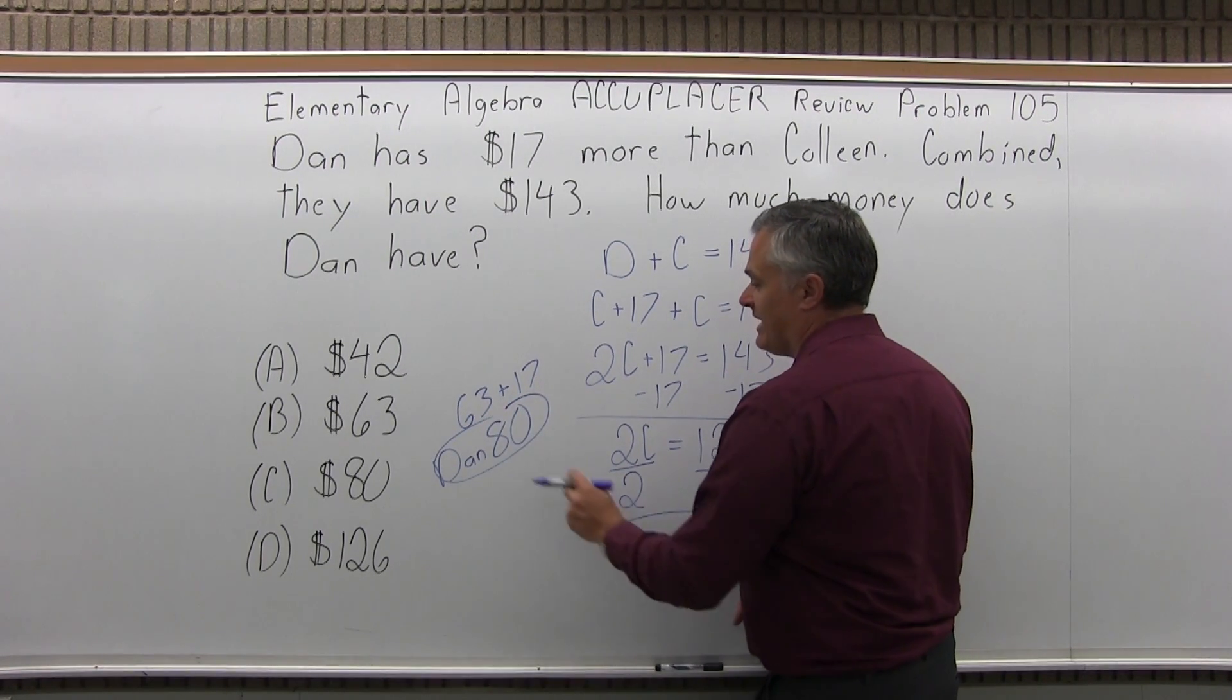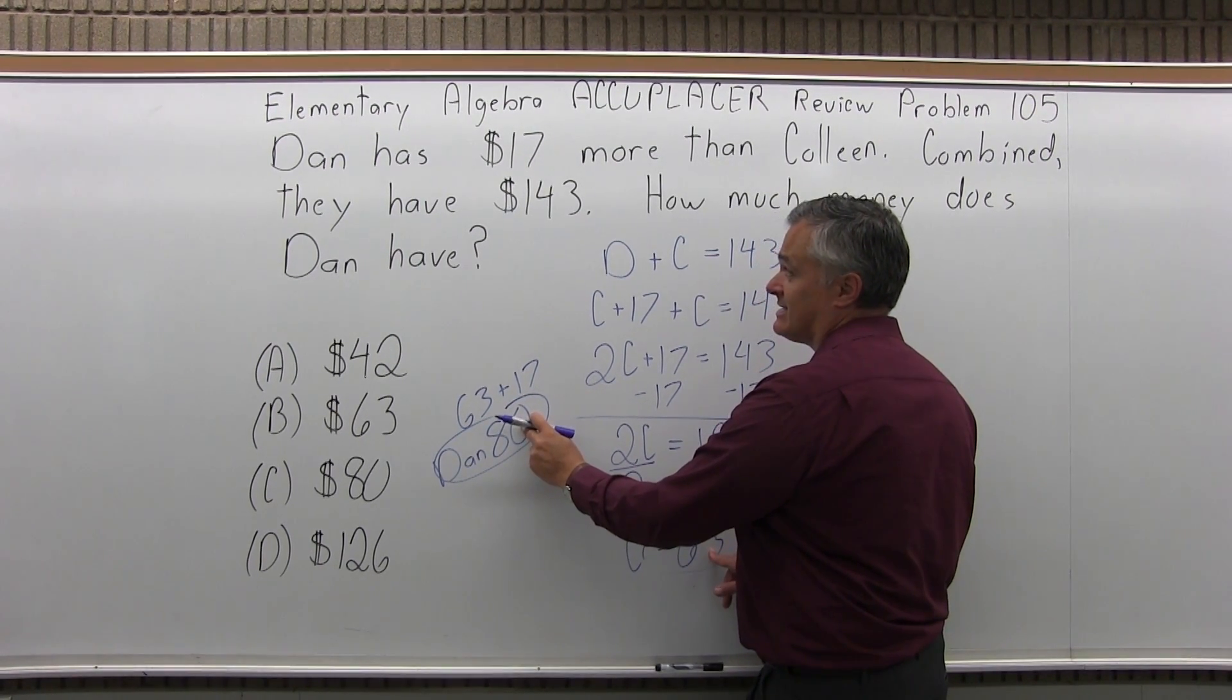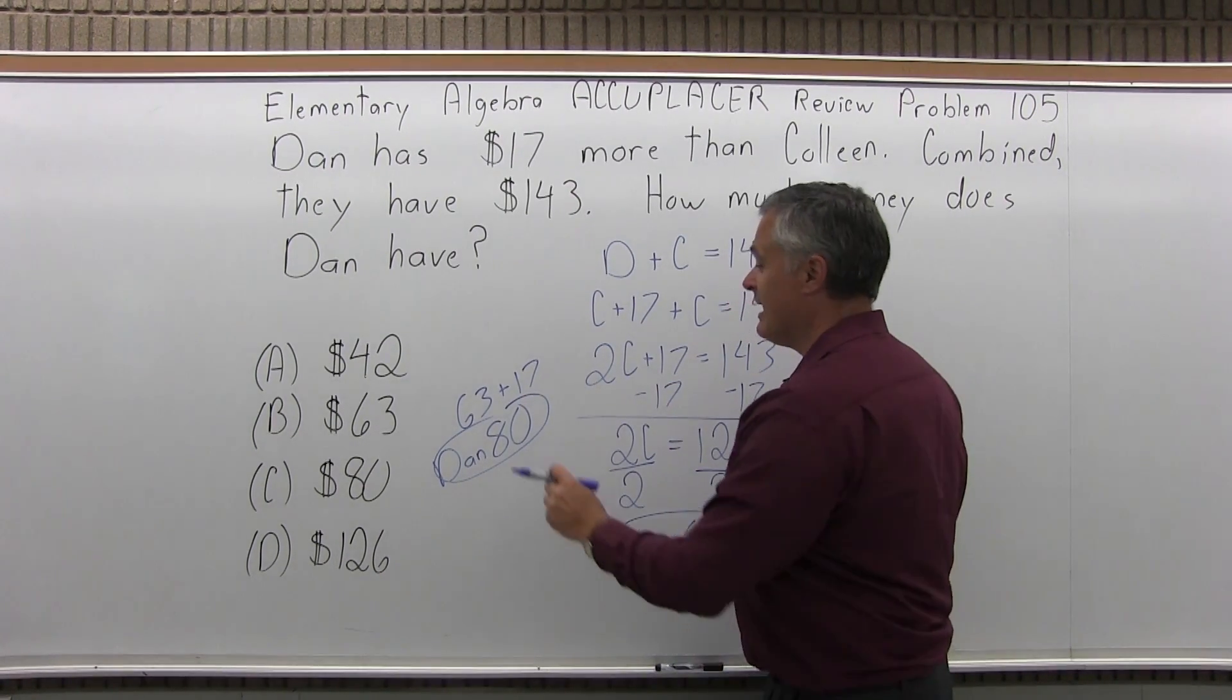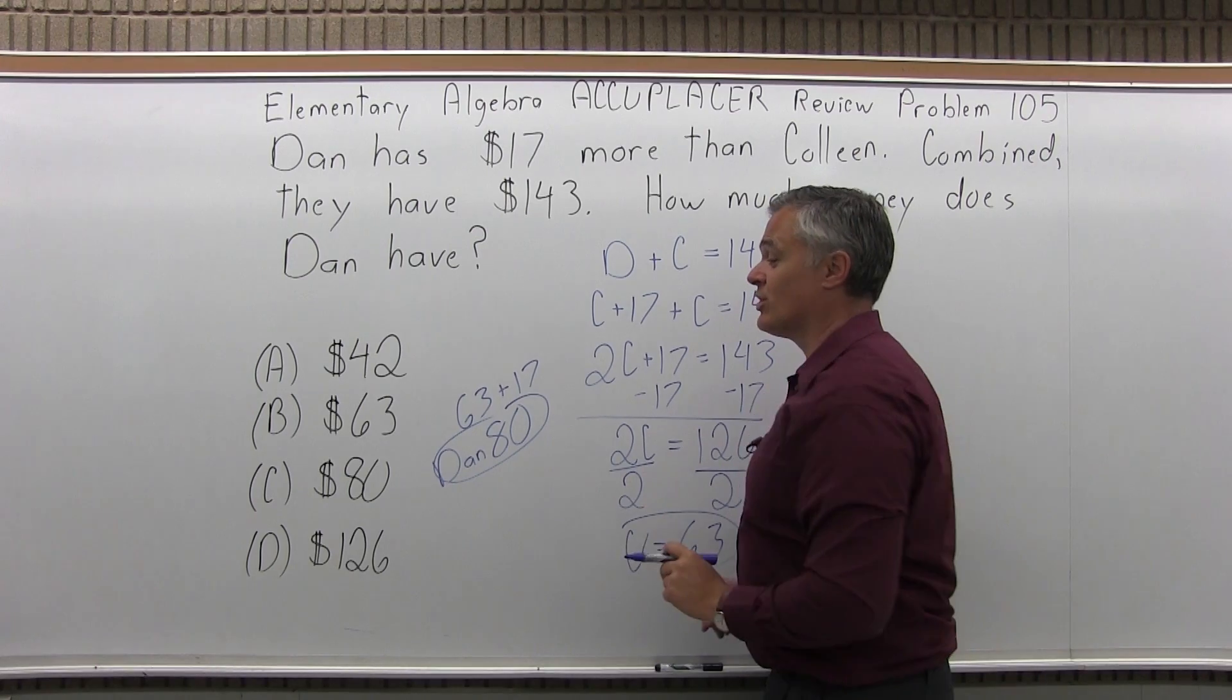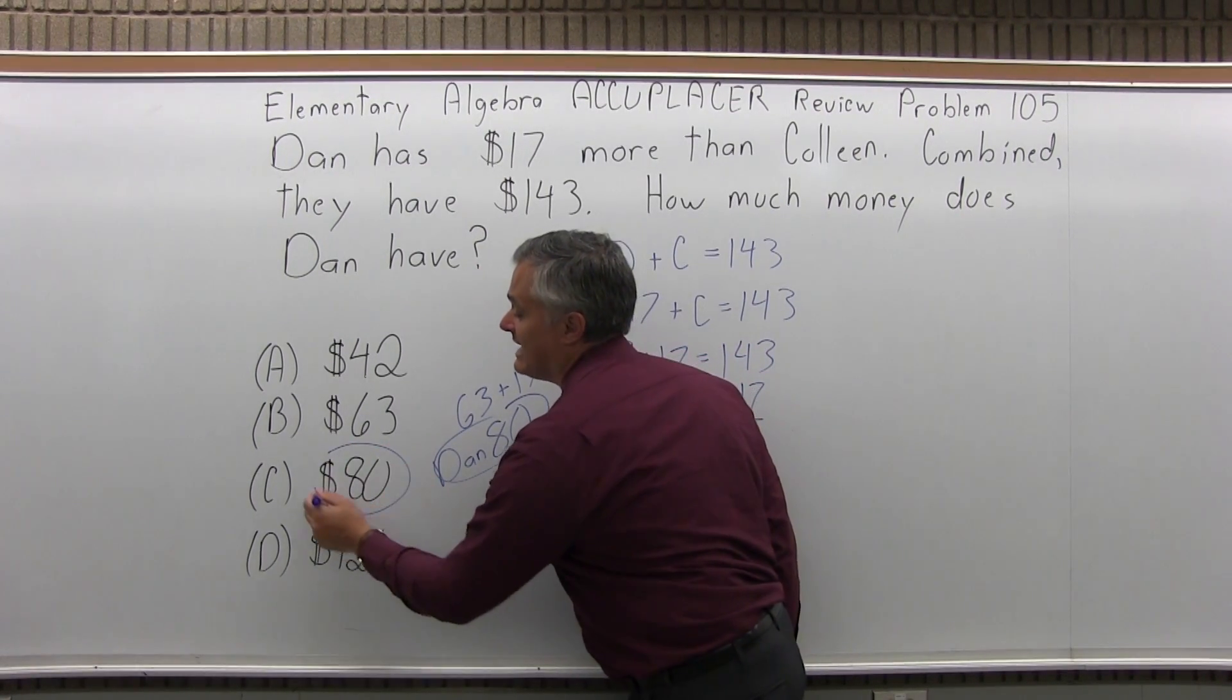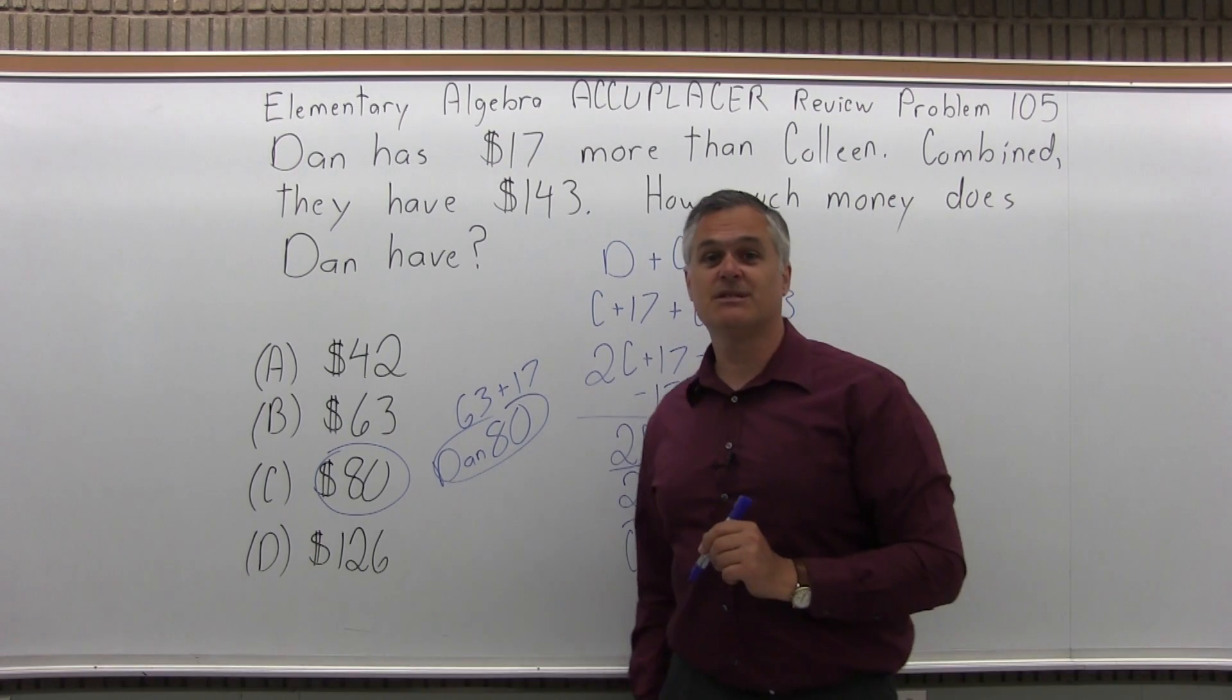Now you can check it. If Dan has 80 and Colleen has 63, if you add those amounts together, they do add up to 143. And Dan does have 17 more than Colleen. So the question, how much does Dan have? Dan has 80 dollars, and that's option C.